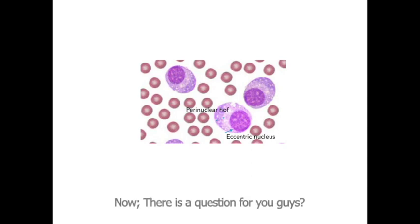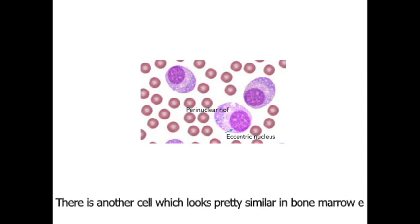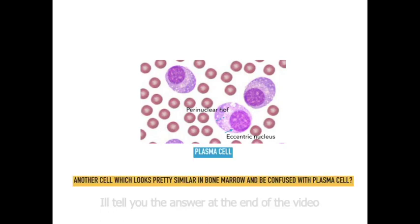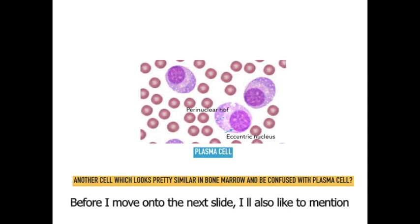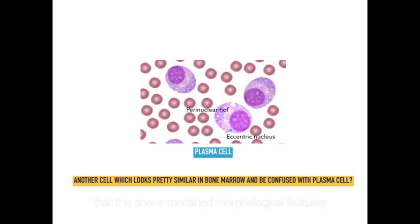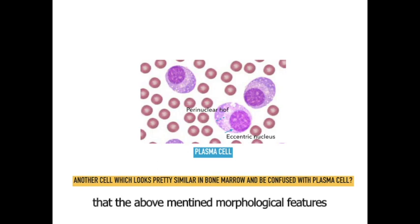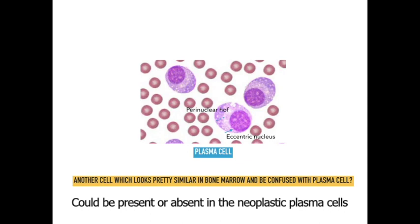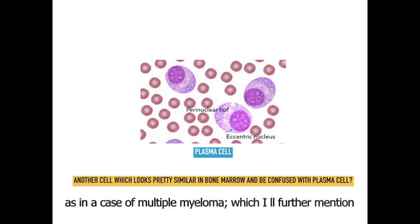There is another cell which looks pretty similar in the bone marrow and can be confused easily with a plasma cell — I'll tell you the answer at the end of the video. I would also like to mention that the above-mentioned morphological features are seen in benign and normal plasma cells. These features could be present or may be lost in the neoplastic plasma cells, as in the case of multiple myeloma, which I'll further mention when we move on to the diagnosis.